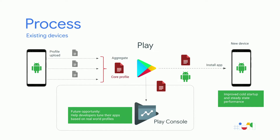The main idea is that applications usually have commonly shared code paths between a multitude of users and devices. Most users generally have the same use case for startup and application usage. With Profiles in the Cloud, initial users bootstrap performance for the rest of the users, which benefits from developers rolling out applications incrementally through alpha and beta channels. Once an application is installed, profiles are uploaded to Play and aggregated into a common core profile, which is downloaded alongside the application in future installs to optimize it during installation.